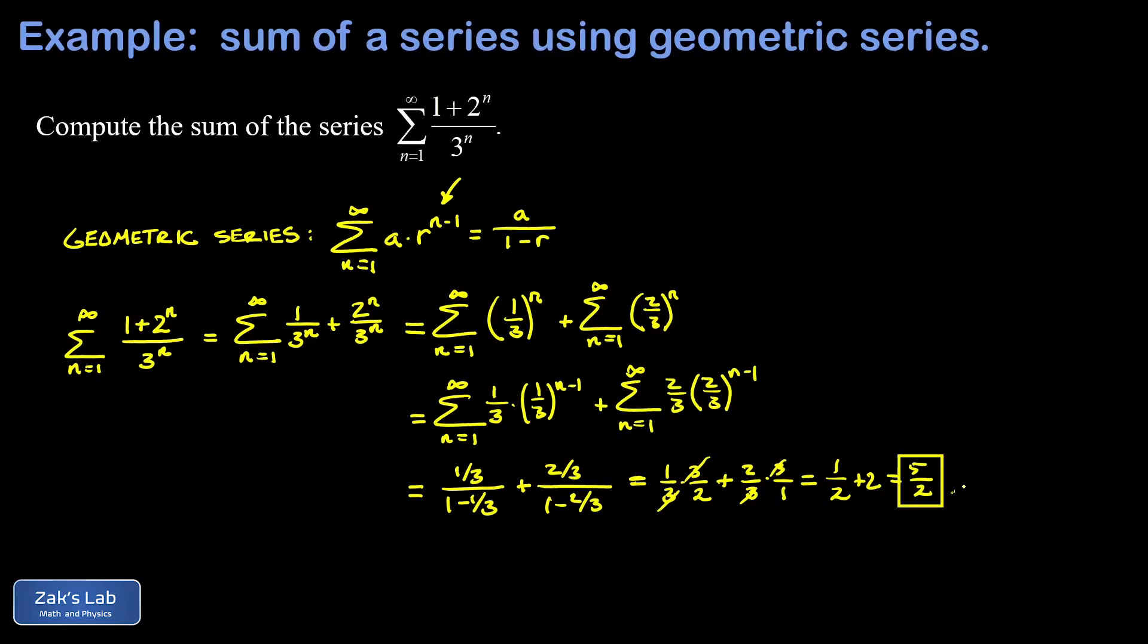There it is, one of those rare occasions where we can actually sum up a series. It turns out if you add together infinitely many terms of this form, 1 plus 2 to the n over 3 to the n, it actually approaches five halves.